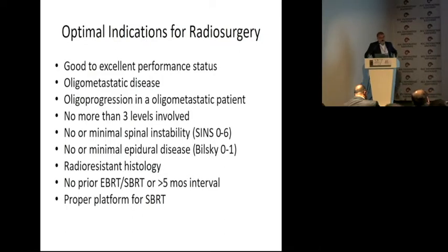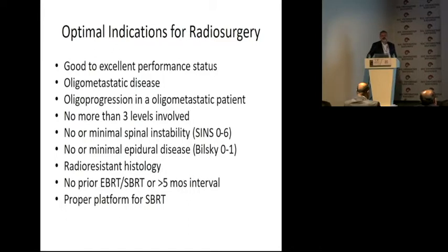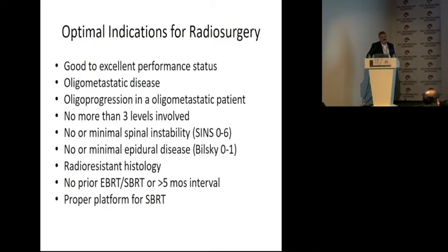The patient should be in good to excellent performance status and have oligometastatic disease, meaning fewer than five metastases in the body. There should be oligoprogression, no more than three spinal levels involved, and no or minimal spinal instability. The SINS score should be 0–6, and the Bilsky score 0–1. Sometimes patients with Bilsky score 2 with mild motor weakness can also be included. Radio-resistant histology is a better indication.